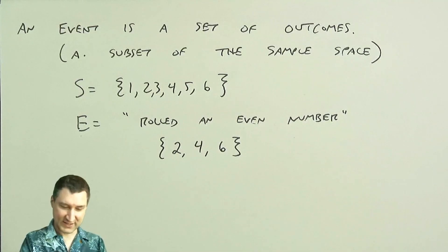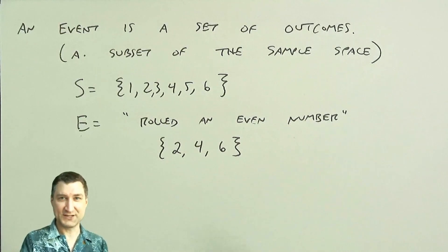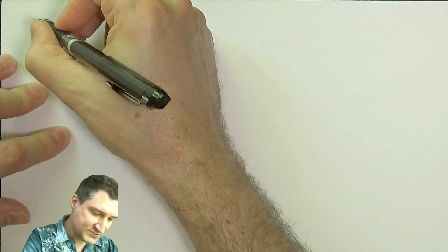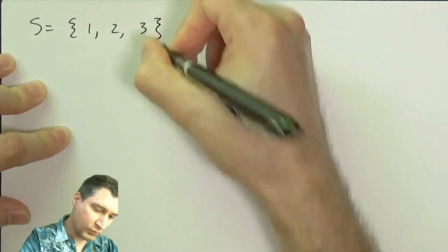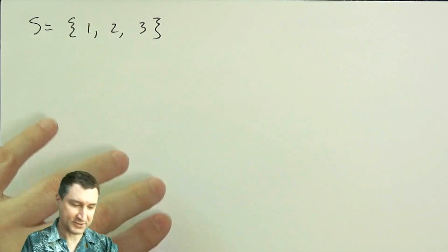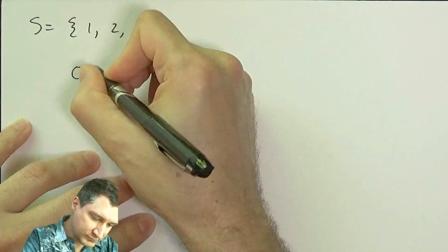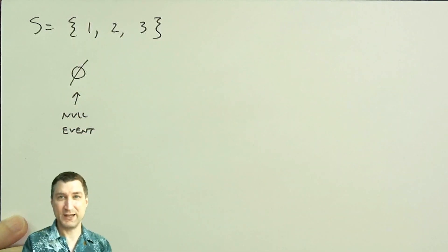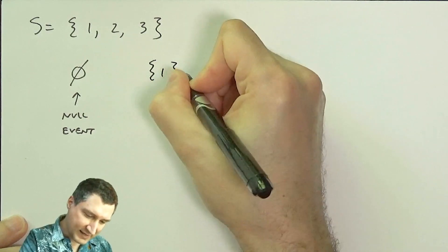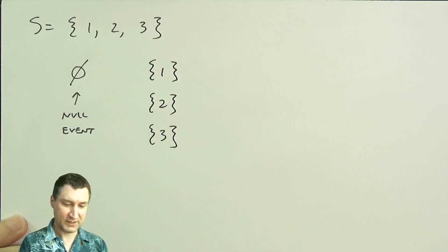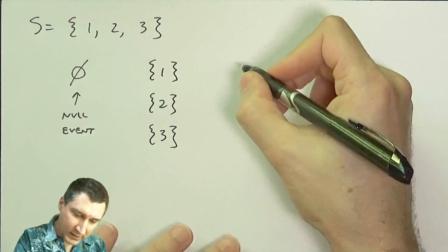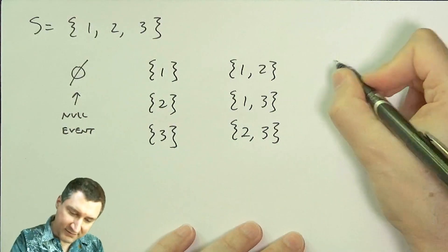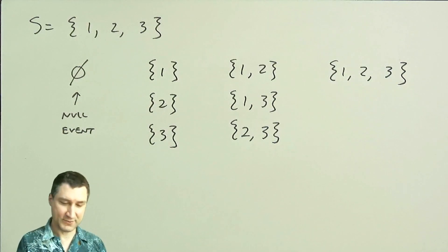Rolling an even number corresponds to the subset two, four, or six. When I have a discrete sample space with a finite number of outcomes, I can actually enumerate — that is, list — all the possible events. Let's do a simple example where the sample space is just one, two, three. So now I'll ask: what are all the possible events? I could get the null event, meaning none of these outcomes happened, though we know that can't actually occur.